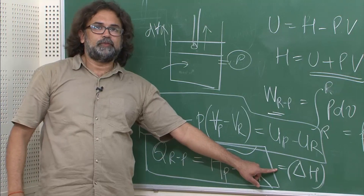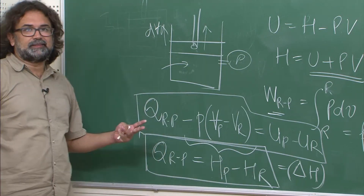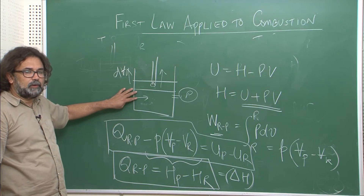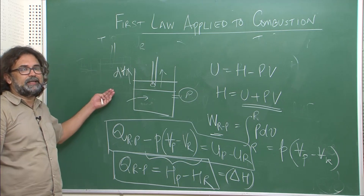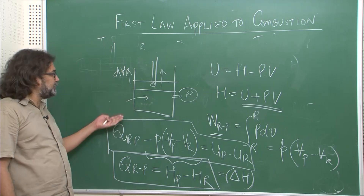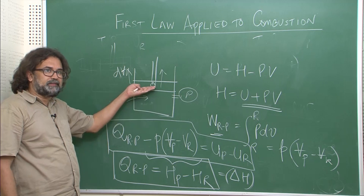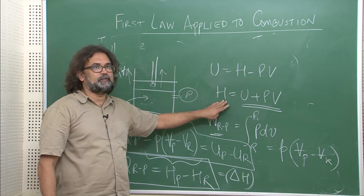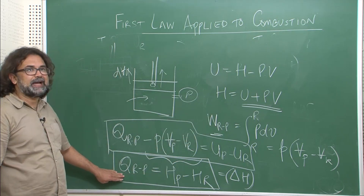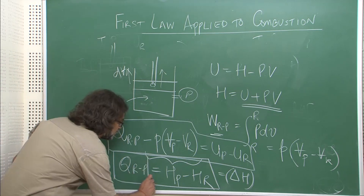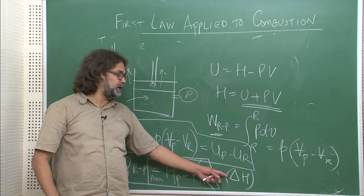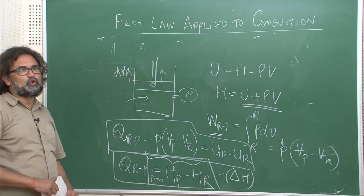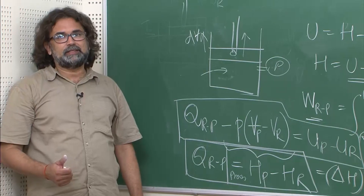Again, ΔH is a negative quantity for a combustion reaction. We have now seen two cases: in the first case the reaction took place at constant volume, work done was zero, and the change in internal energy directly equaled the heat interaction. In the second case, pressure was constant, the piston had to move up — this was added flow work — and by the definition of enthalpy the heat of reaction at constant pressure equals Hp − Hr, a negative quantity for exothermic reactions.